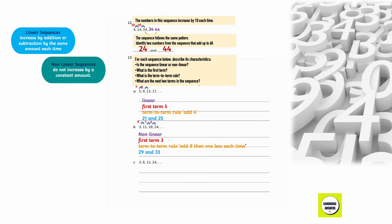For the sequence 3, 6, 12, 24: the differences are 3, 6, and 12 — the differences are doubling. This is a non-linear sequence since the difference is not constant. The first term is 3, the term-to-term rule is double, and the next two terms are 48 and 96.